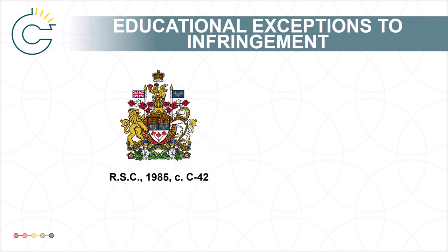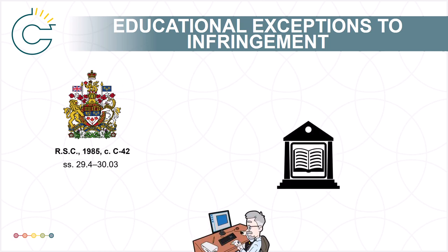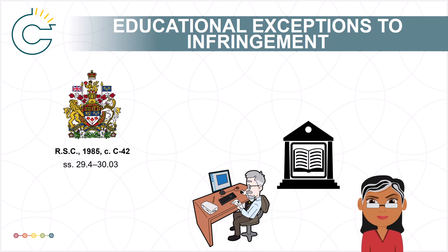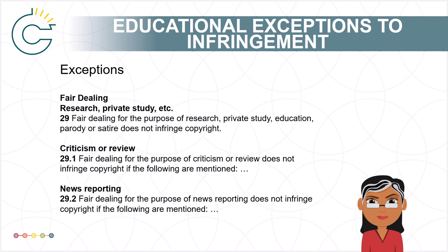Section 29.4 to Section 30.03 of the Act describe the exceptions to infringement that apply specifically to educational institutions and staff. It is critical for people who work in education to understand that in addition to these exceptions, they can also rely on the Fair Dealing Exception, discussed further in other modules. In most cases, it is better to look at the Fair Dealing Exceptions first, as they provide more flexibility than the exceptions we will be discussing here.